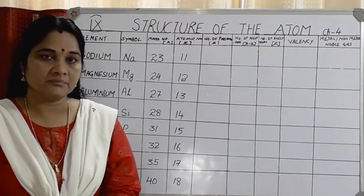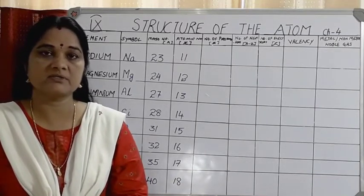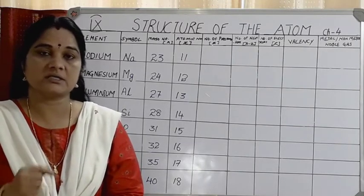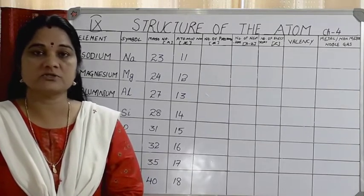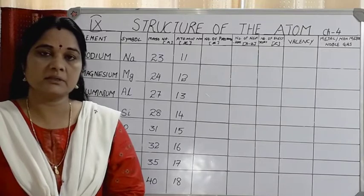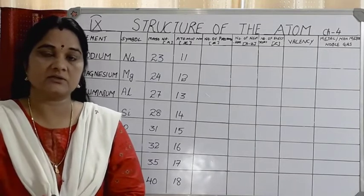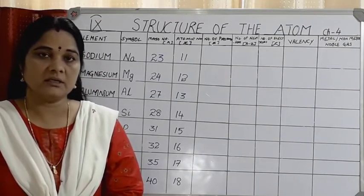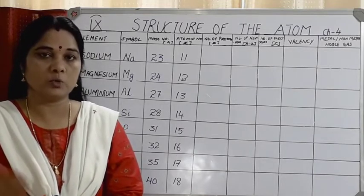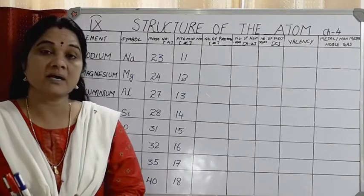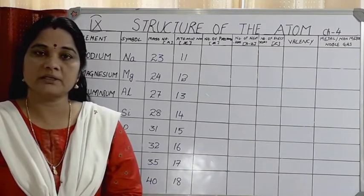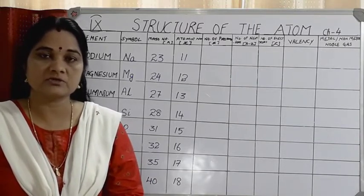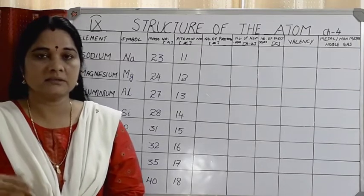Electronic configuration is nothing but the distribution of electrons in various shells around the nucleus. The shells are numbered 1, 2, 3 from the interior outward, and the first shell is the K shell, then L shell, M shell, N, and O. The maximum number of electrons per shell: K shell accommodates 2, L shell accommodates 8, M shell accommodates 18, then 32, and so on.